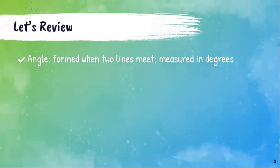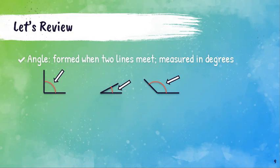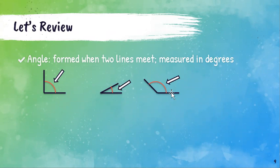Another term is angle. An angle is formed when two lines meet, and angles are measured in degrees. Here we have some examples of two lines meeting: two lines meet and here is a small angle, two lines meet and there's a little angle, and two lines meet and here is a big angle.